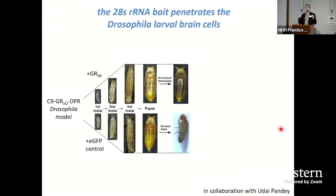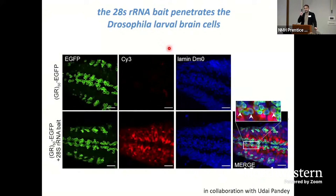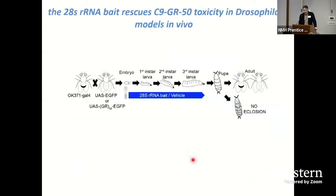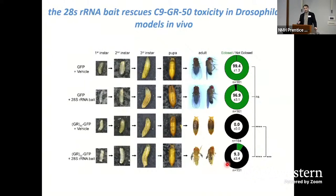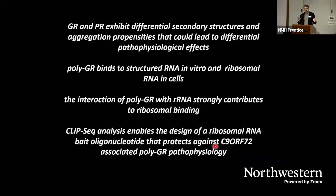Last but not least, we wanted to test the ability of this molecule to mitigate toxicity in an in vivo model system. We teamed up with Udai Pandey at the University of Pittsburgh, who utilizes Drosophila models. We started with a highly toxic model of GR toxicity where flies expressing GR50 fail to reach adult stages. When we give labeled 28S bait to these flies — delivered within their food — it makes it into the nervous system, into their neurons, and we see a small but highly significant mitigation of toxicity: essentially zero percent of GR50-expressing flies reach adulthood, but about 9% of cases fed the 28S bait are able to reach adult stages.